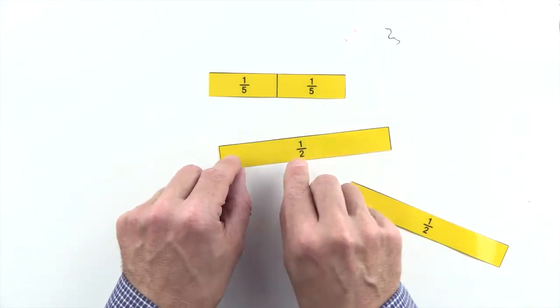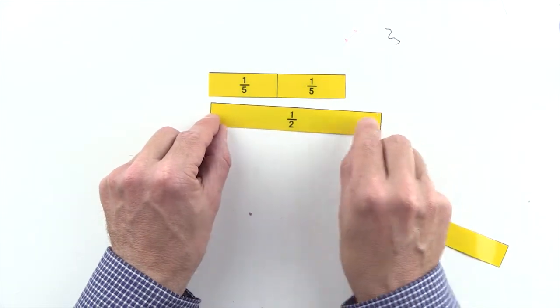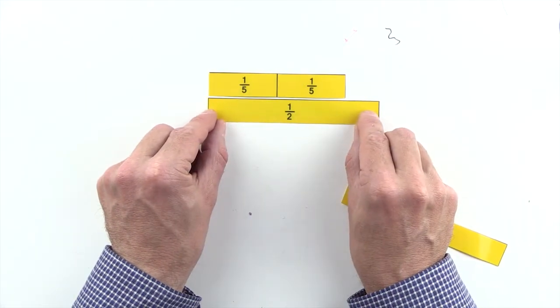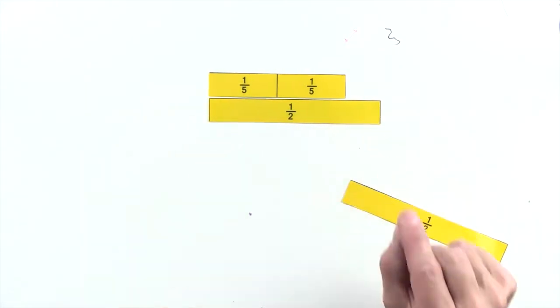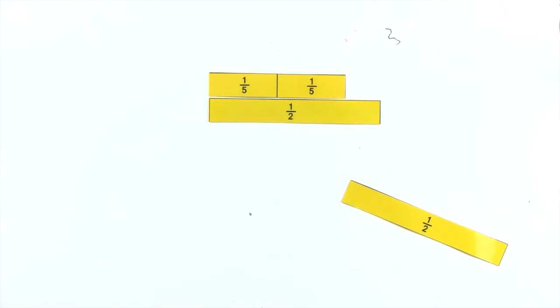One-half is greater than two-fifths, so we can't make an equivalent fraction to two-fifths out of halves.